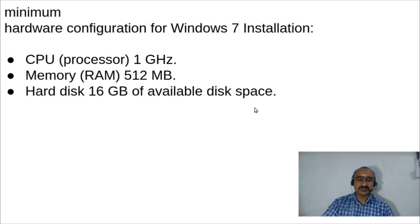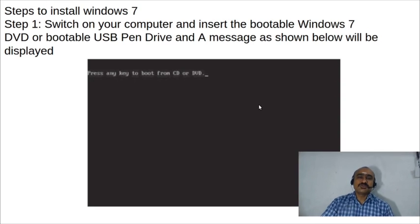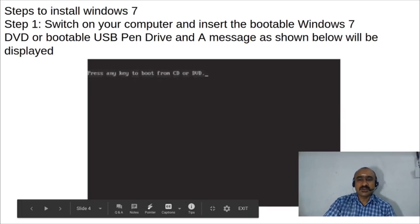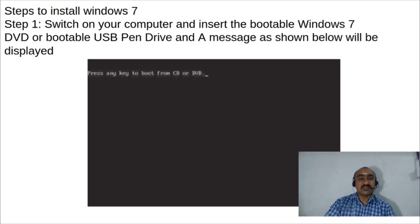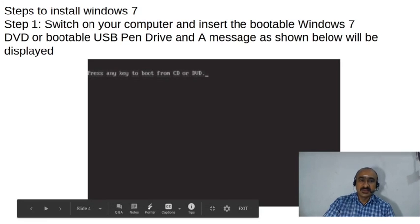Moving on to the installation process — first you have to buy Windows 7 from an authorized vendor. Always use the original version; do not use a pirated copy. From an authorized vendor you will get a bootable USB pen drive or a DVD along with a serial number.